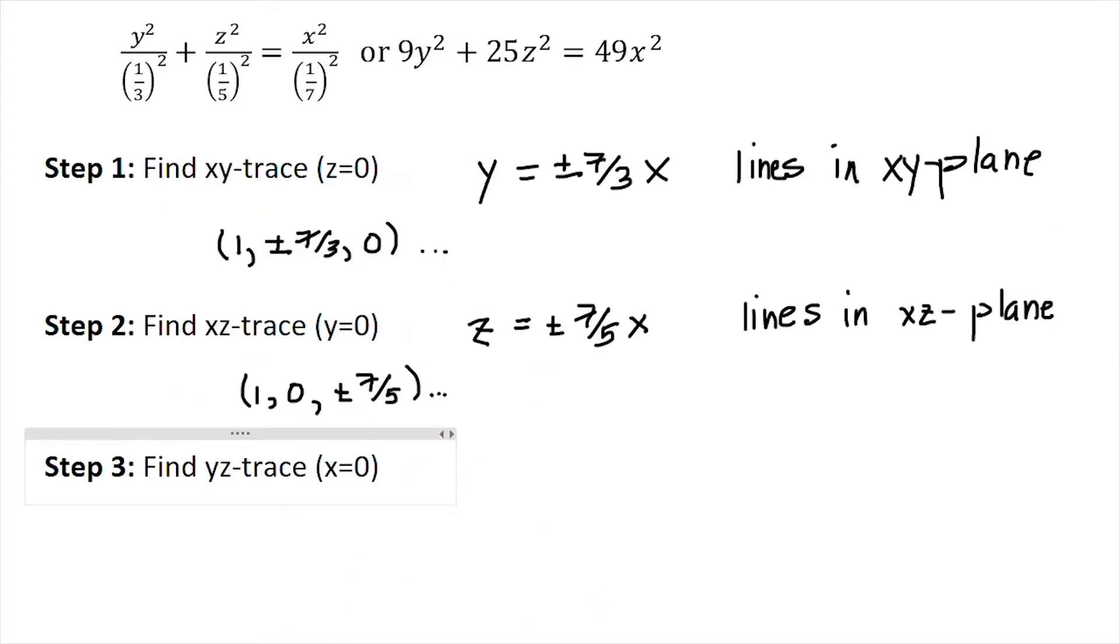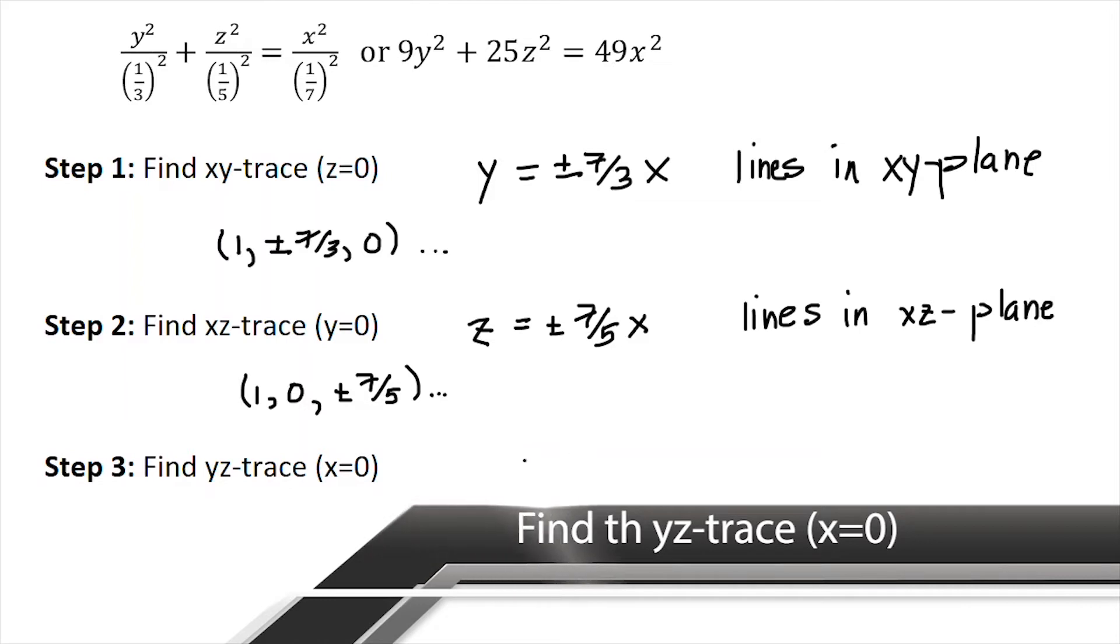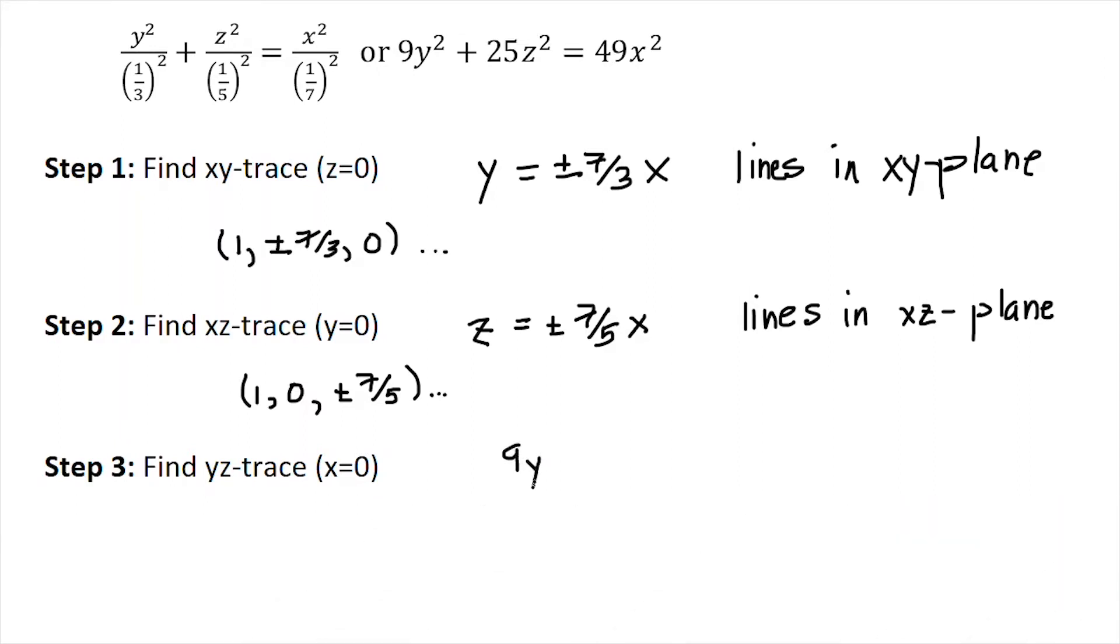Now finally, in step three, I want to find the yz-trace where x = 0. If I plug x = 0 in, I get an impossibility. I get 9y², which is always positive or 0, plus 25z², that's always positive or 0, equals 0. So there's only one possibility,